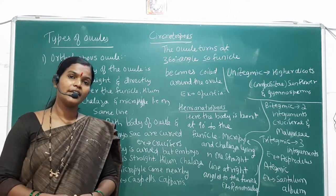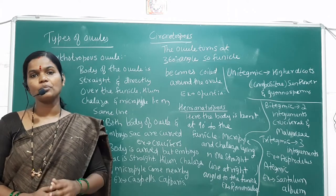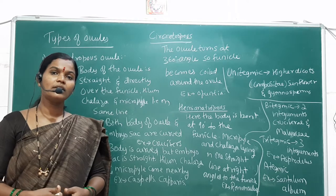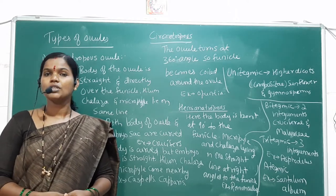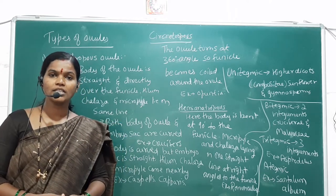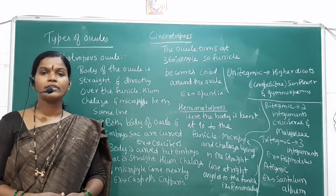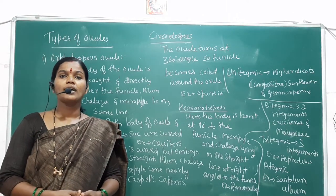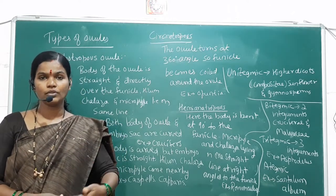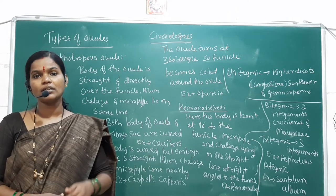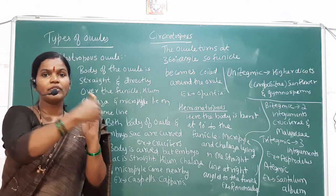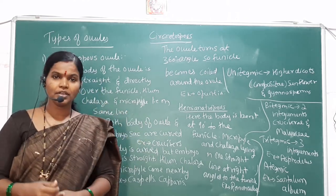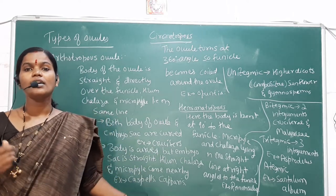The anatropous ovule is an inverted ovule. The parts we studied include: micropyle, funicle, chalaza, outer integument, inner integument, embryo sac (also called the female gametophyte), nucellus, hilum, and raphe. The funicle is the stalk of the ovule. The hilum is the point of attachment of the funicle to the body of the ovule. The raphe is the ridge formed between the body of the ovule and the hilum.